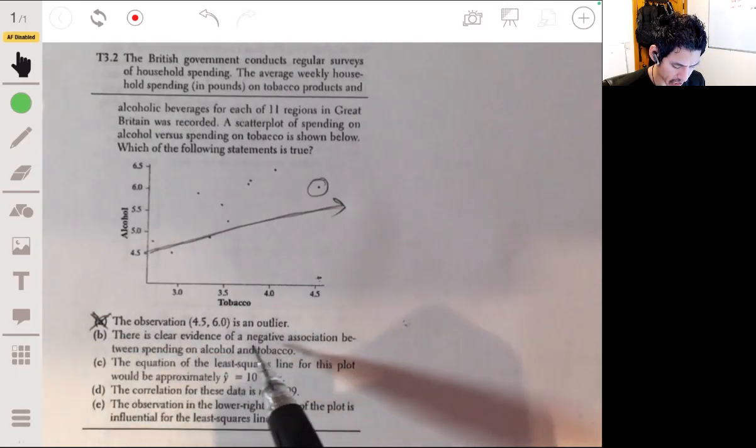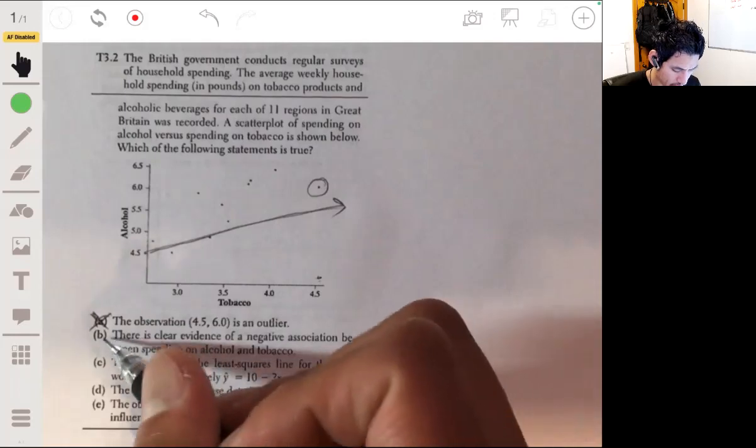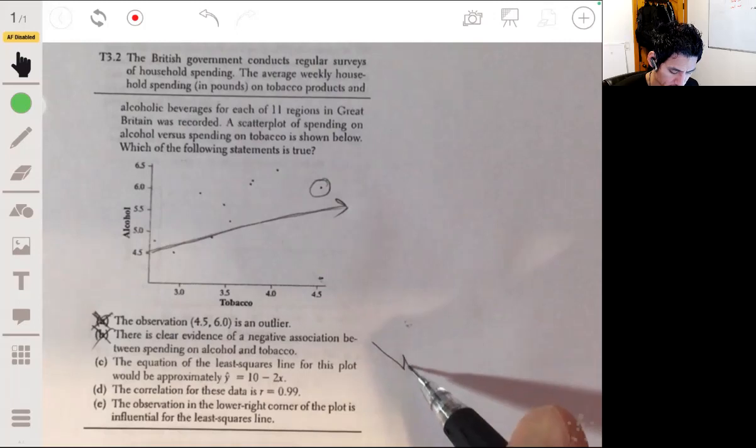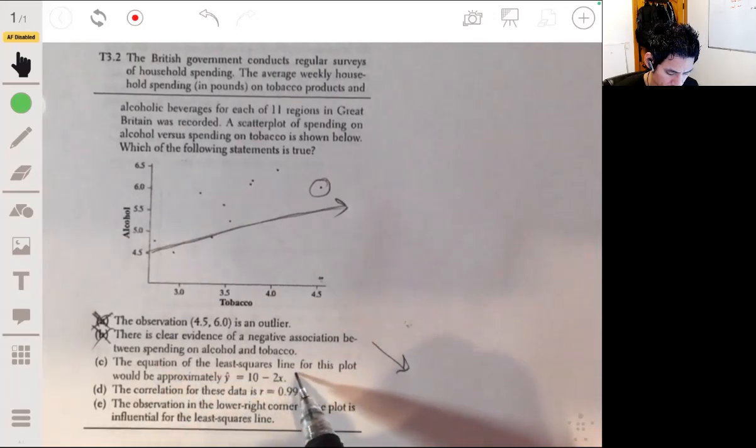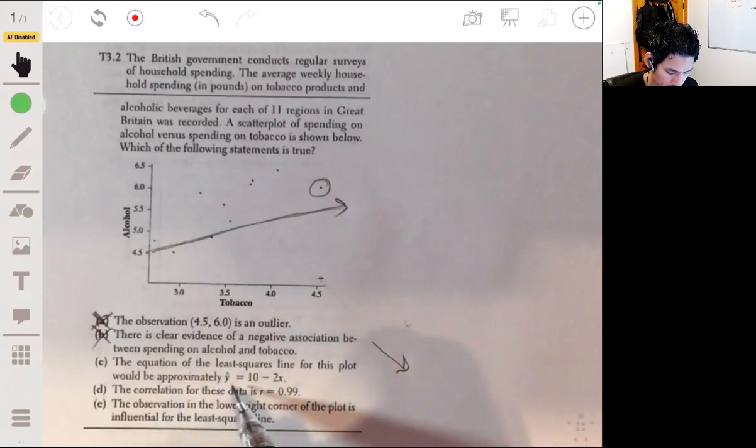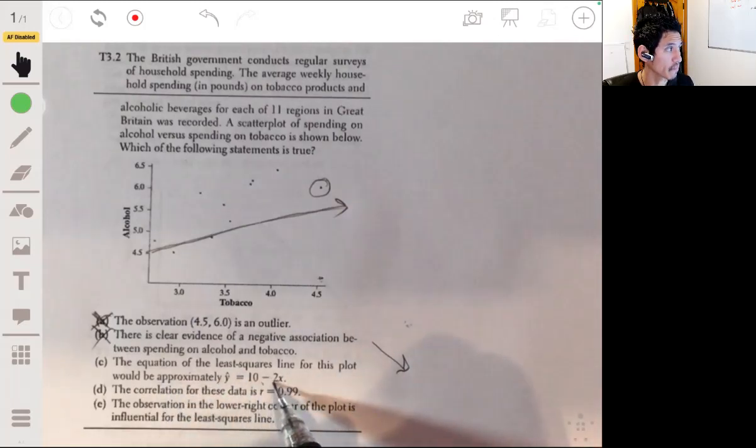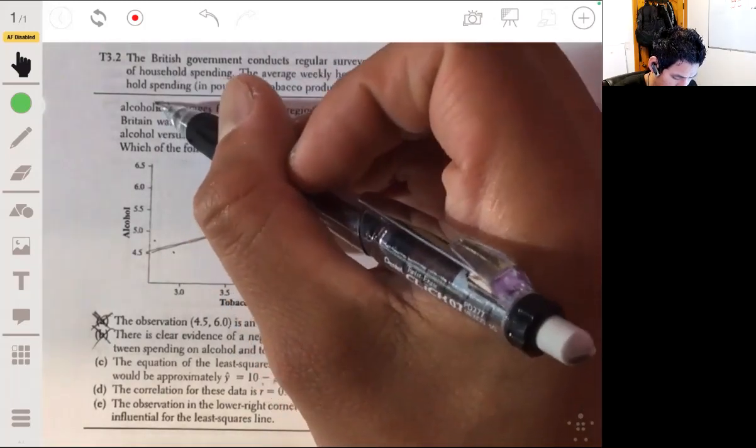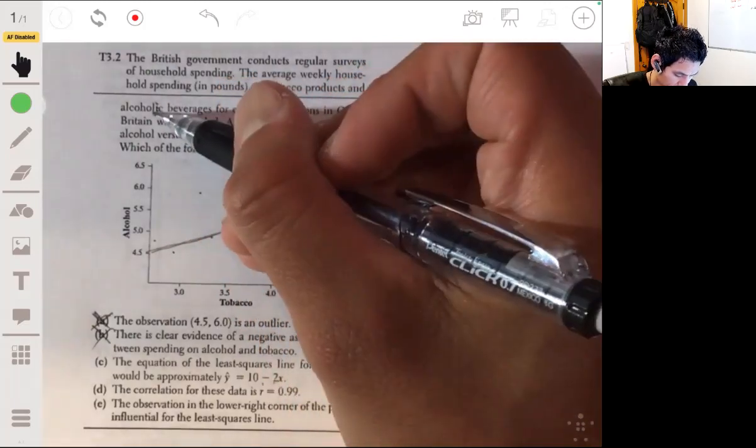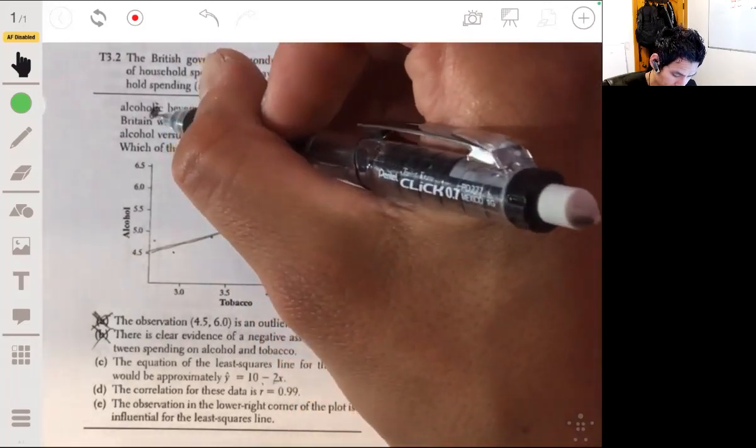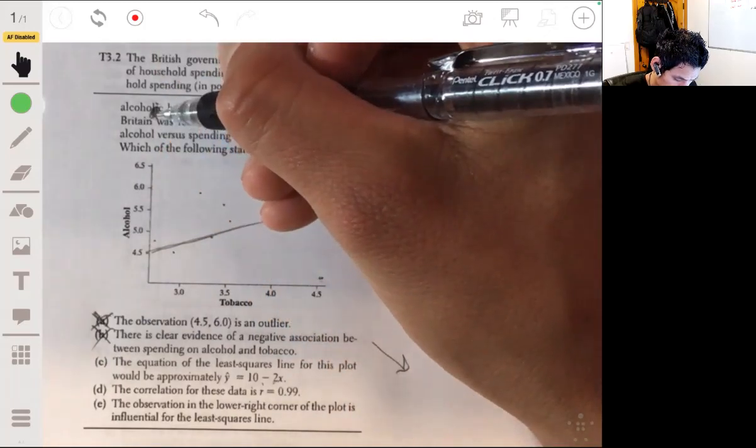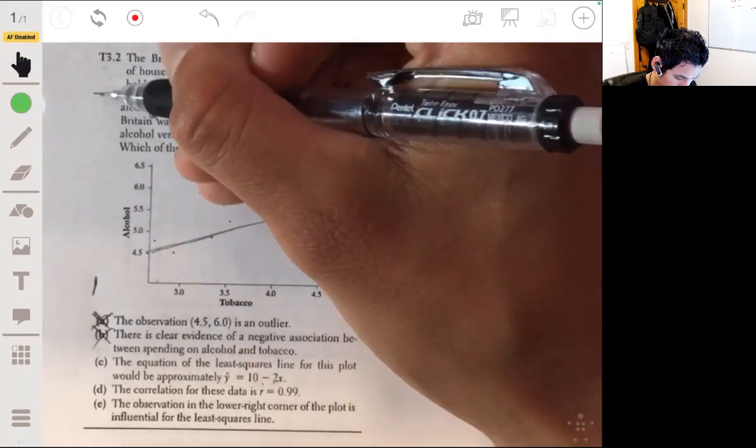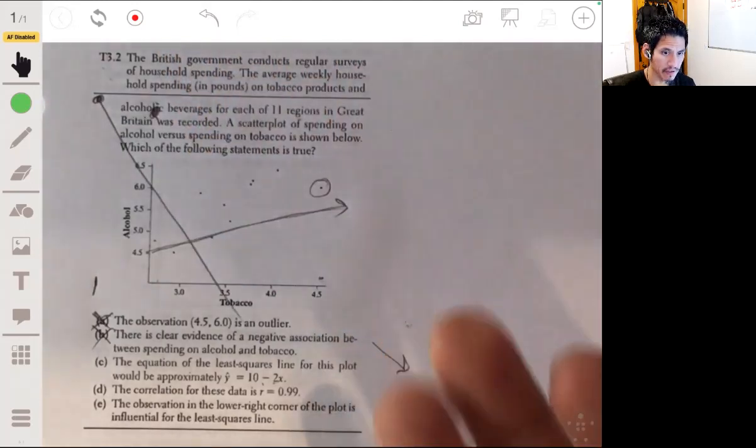So it's not A. There's clear evidence of a negative association between spending on alcohol and tobacco? No, it's definitely not true because that would mean it's going downward. The equation of the least squares regression line for this plot would be approximately y-hat equals 10 minus 2x. We don't know. 10 would be up here, and actually, no, we do know it wouldn't be downward. That means our line would be like over here at 10 and it would steep down. 10 would actually be over here because when y equals 0 it would be—yeah, maybe over here. It would still be negative, so it doesn't matter. Maybe have a negative slope.